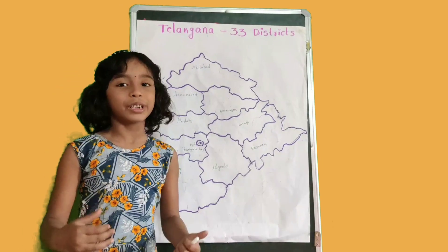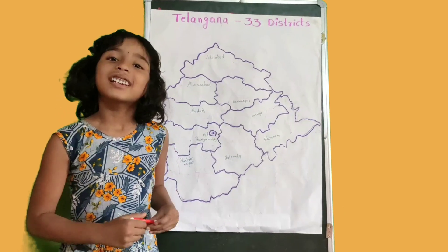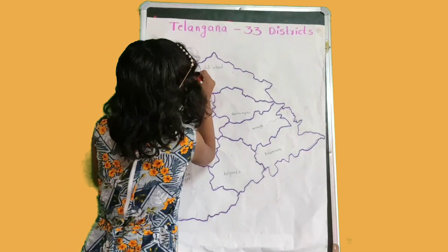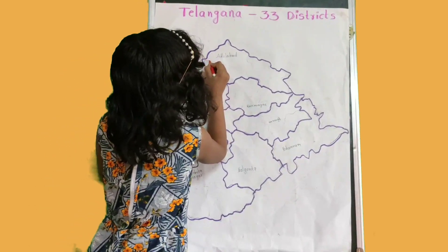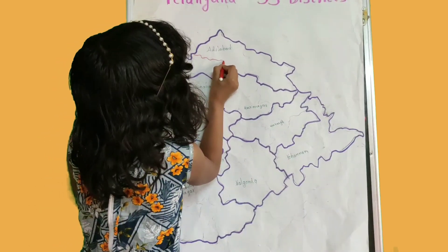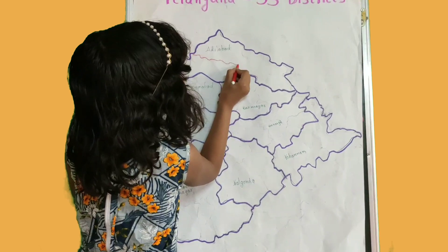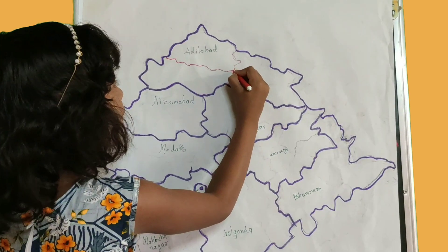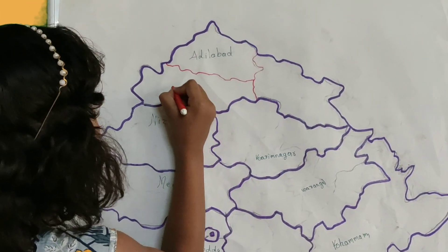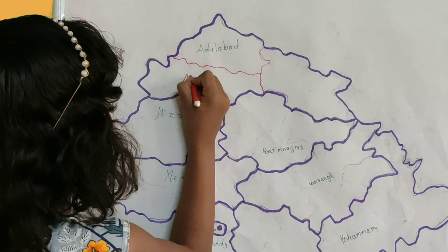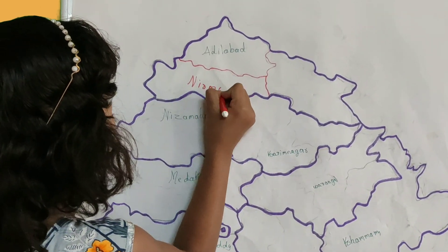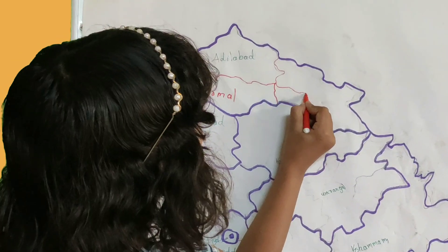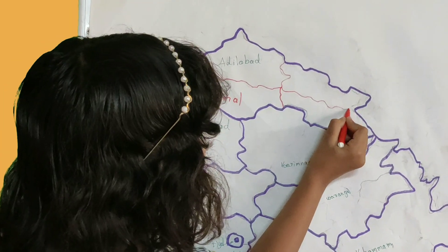Now we are going to identify the 33 districts. The Adilabad district is divided into 4 districts: Adilabad, Nirmal, Asifabad, and Kumurambheem.